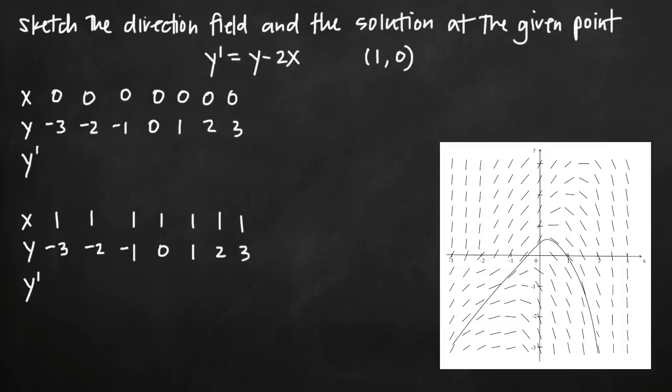Today we're going to talk about how to sketch a direction field and then how to sketch a solution through the direction field that passes through a particular point. In this problem we've been given the equation y prime equals y minus 2x and the point (1, 0). I've already taken a sketch of the direction field here so you can visualize the final product as we work through the problem, but we'll still work through and explain how to sketch it.